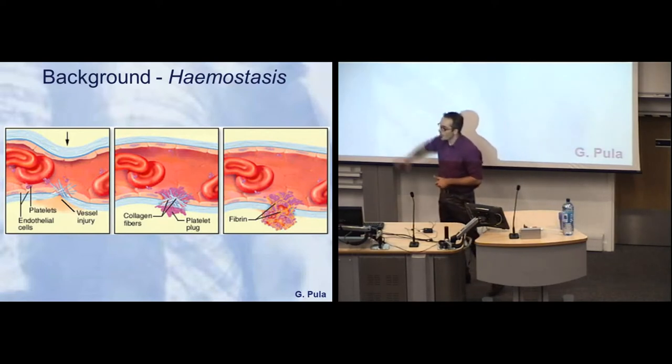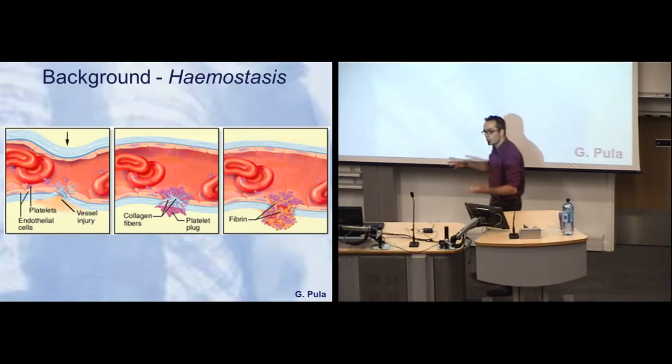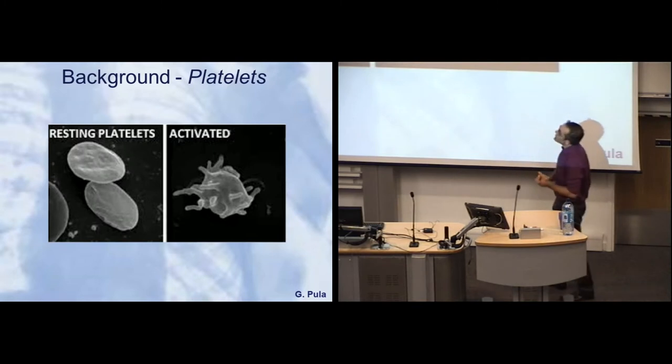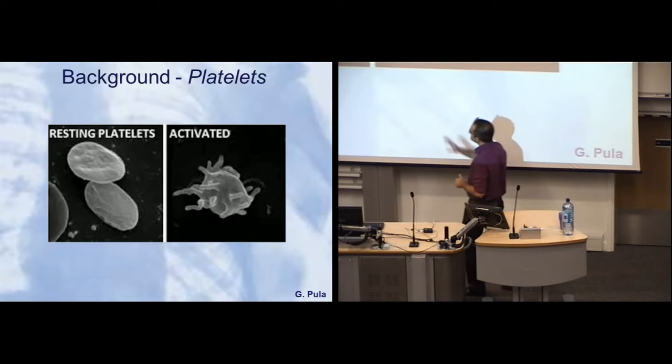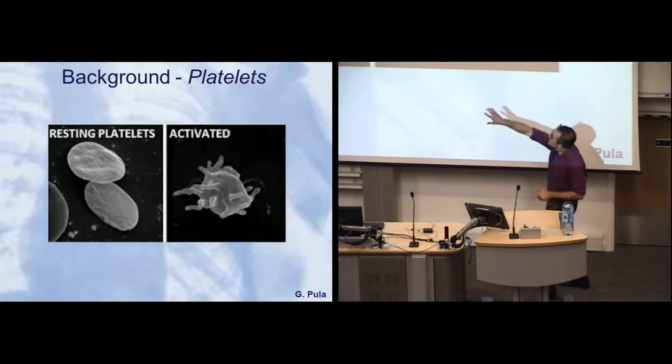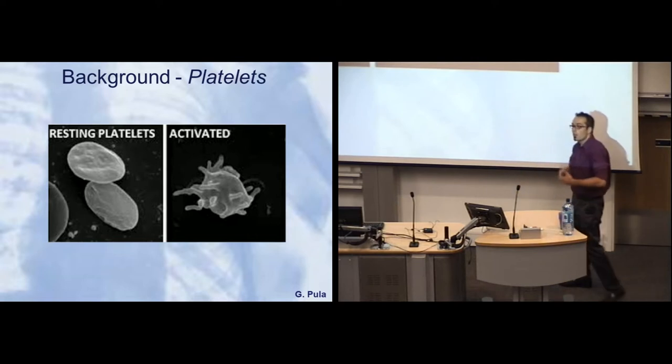They detect where there are damages or injuries and they form a plug to stop the bleeding, which we call hemostasis. Hemo is blood and stasis is control. They do so by detecting certain proteins appearing in the damaged vessels. They undergo activation, forming these protrusions. You can see the change of shape here—they become much more sticky and they start to clump with each other.